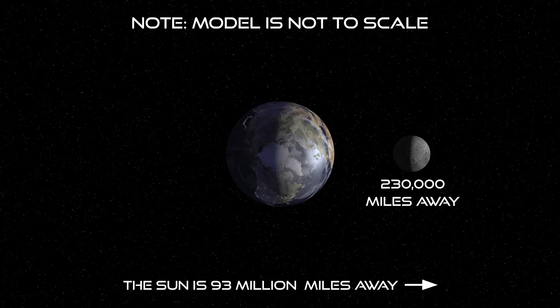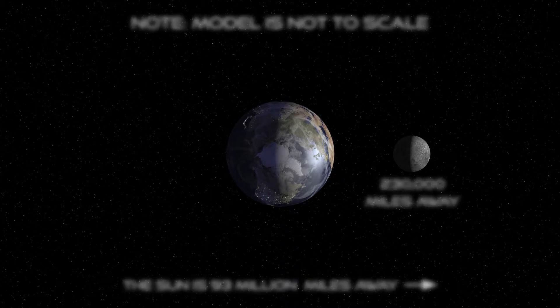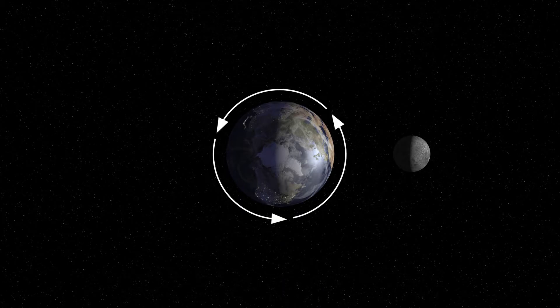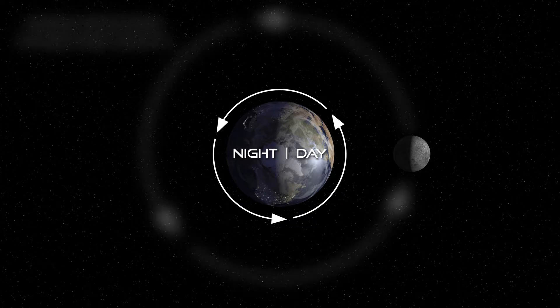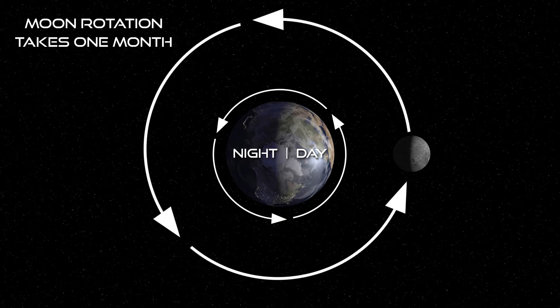In our model, Earth will rotate and show where it's day and night on both Earth and the Moon. We'll track the Moon as it orbits Earth one time, which takes about a month, and see how it looks in the sky to us here on Earth.